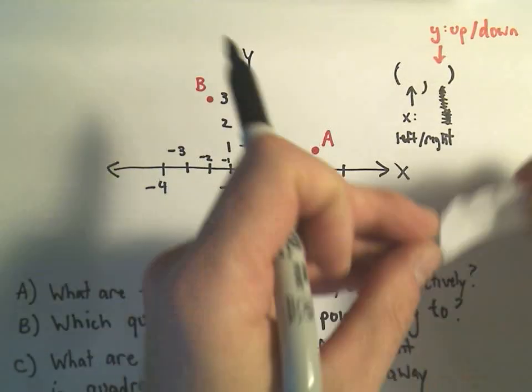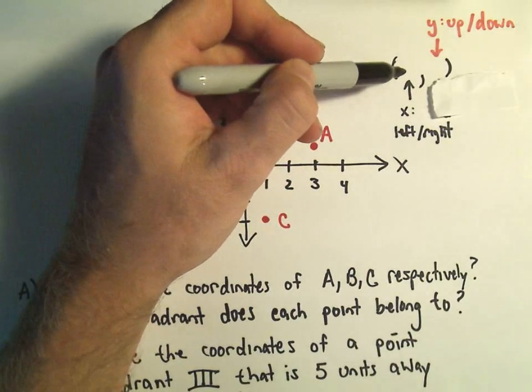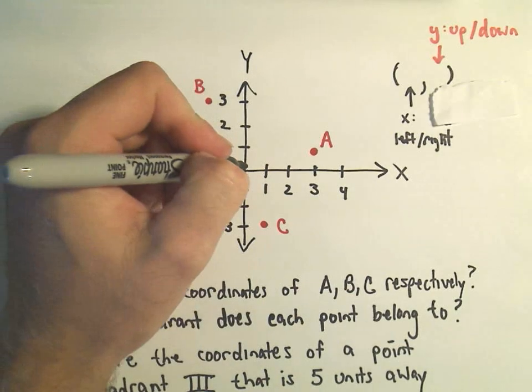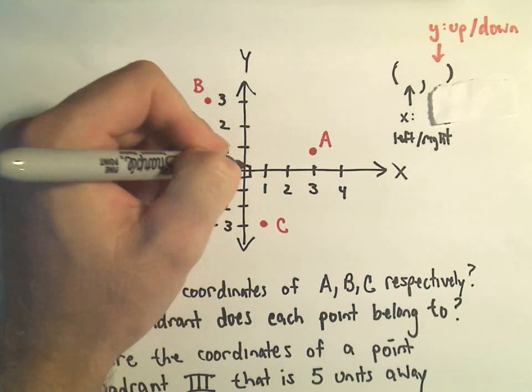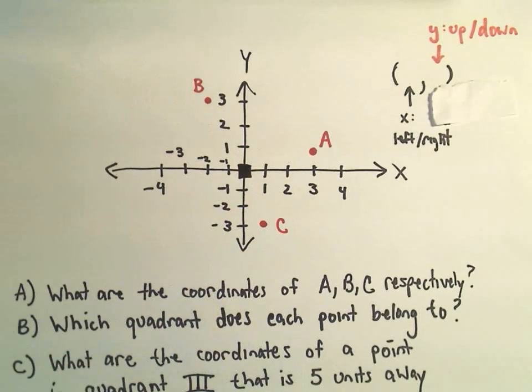Forget about my little squiggle there. The first number represents the x-coordinate, and to me, what that does is it tells me how far I go left or right from the point that we call the origin. That's the point right at the intersection of the x and y-axis.